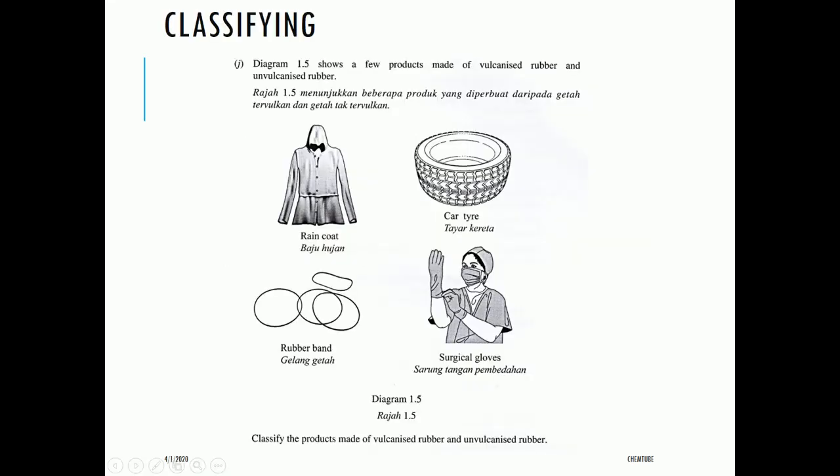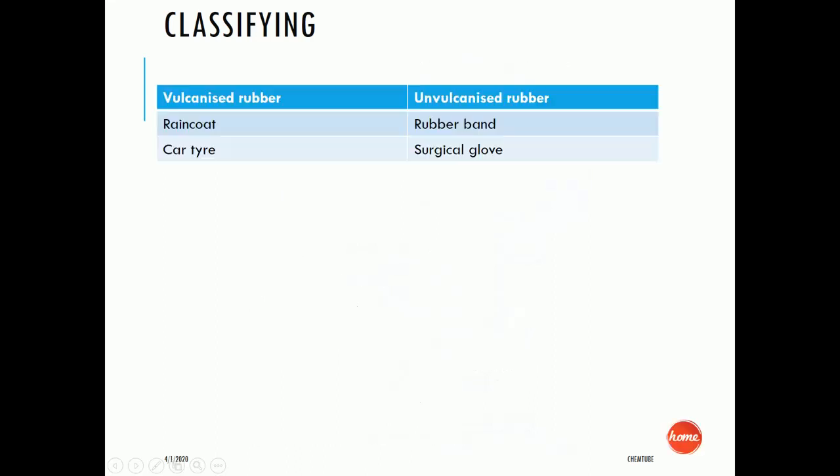Classify the products into vulcanized and unvulcanized rubber. Score 3: vulcanized rubber — rain coats and car tires; unvulcanized rubber — rubber bands and surgical gloves.